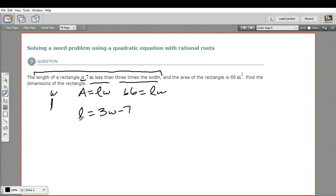Once we've got that, we can take this. It equals L, so we can substitute it in for L right there. If we did that, we would have 66 equals 3W minus 7 times W. And when we distribute this W, multiply it by the 7, multiply it by the 3W, we're going to get a quadratic equation. So this will give us W times 3W would be 3W squared, and minus 7W.